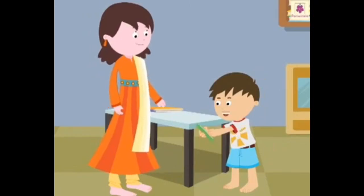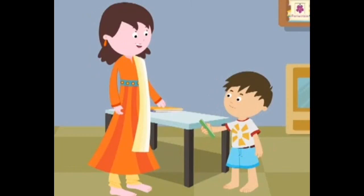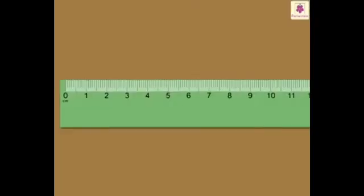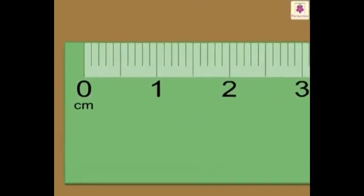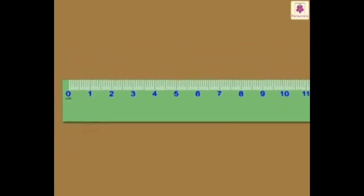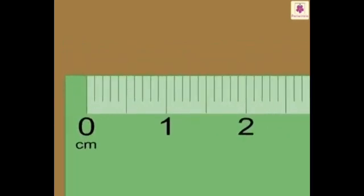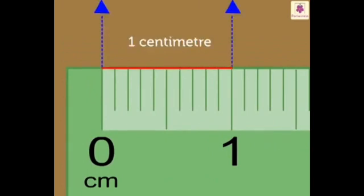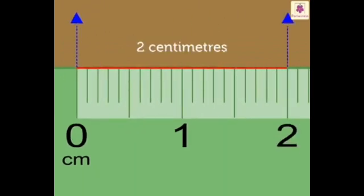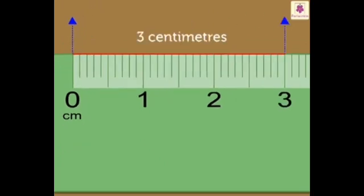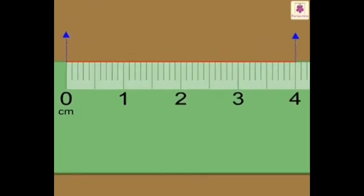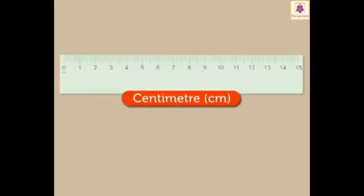But how do we measure the length with this? Come, let me explain. We measure the length from the zero mark by counting numbers from 0 to 15. We read the length as 1 centimetre, 2 centimetres, 3 centimetres and so on. To write centimetre, we use its short form, that is CM.